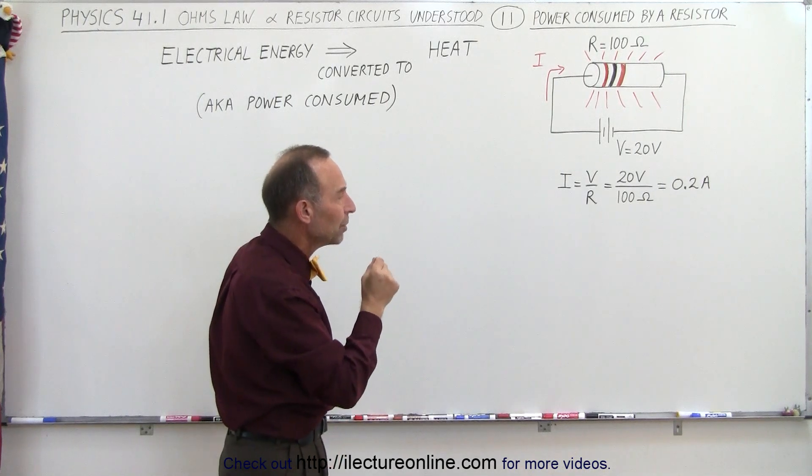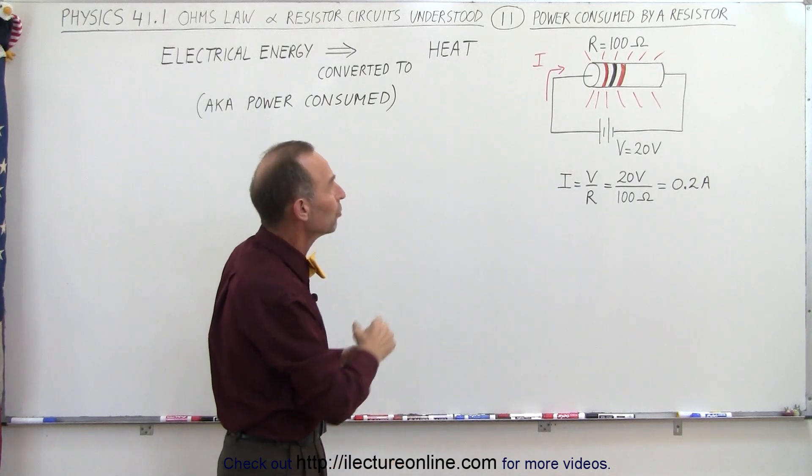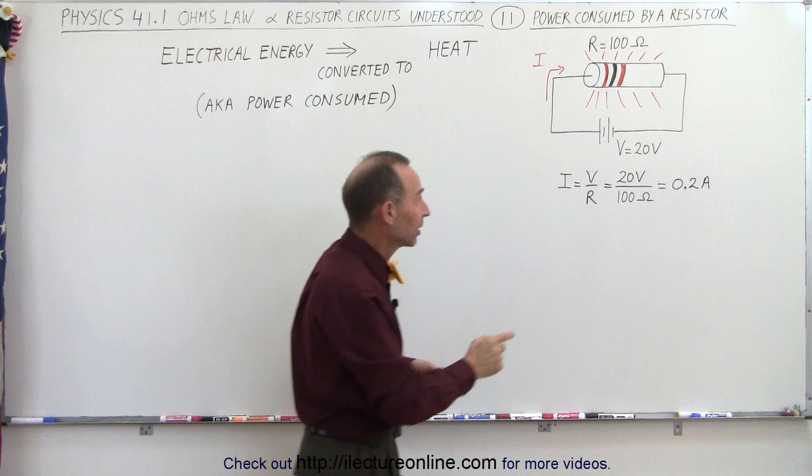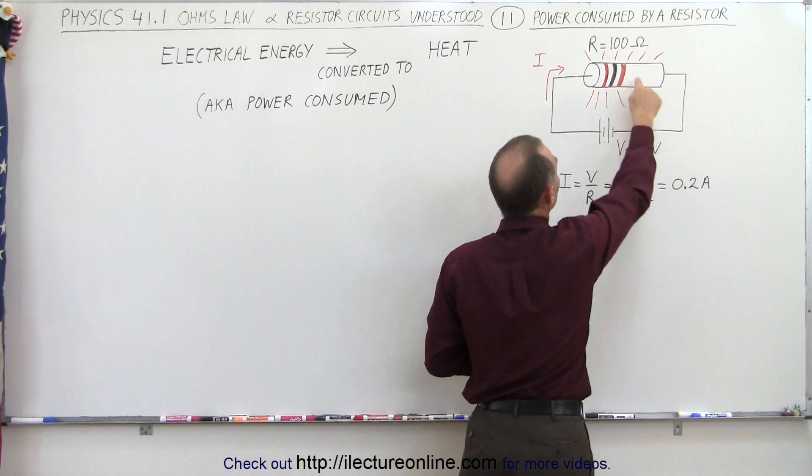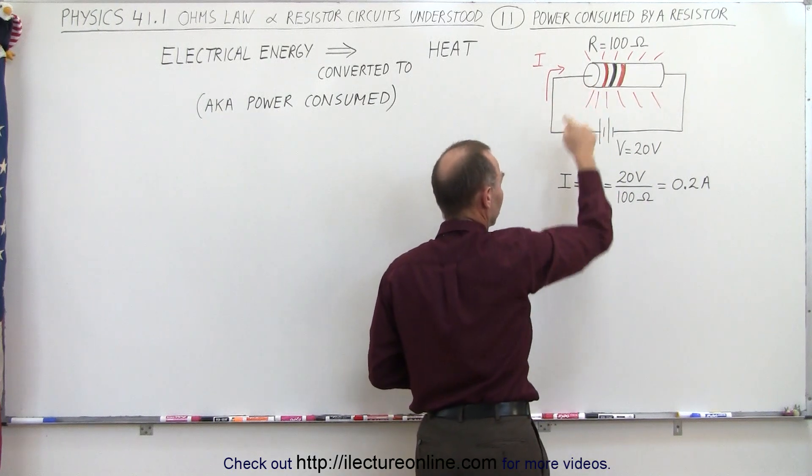And so therefore, what we need to do here is calculate how much heat is dissipated or how much heat is consumed by one of those resistors. Well, first of all, if we're given the voltage supply, in this case 20 volts, and we're given the resistance of the resistor, we can calculate the current through the resistor.